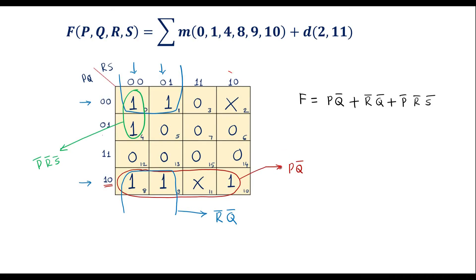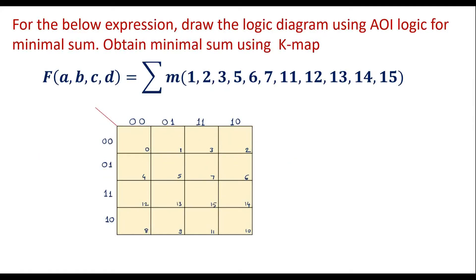Now let me consider the second numerical. For the below expression, draw the logic diagram using AOI logic for minimal sum — obtain minimal sum using KMAP. So here the minterm values are given. Let me enter the KMAP, with axes A, B and C, D.